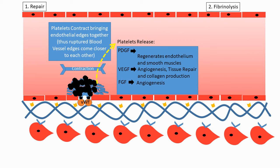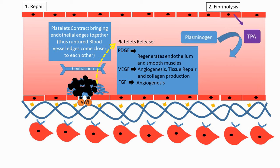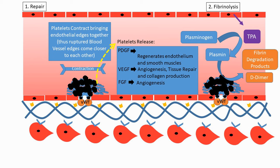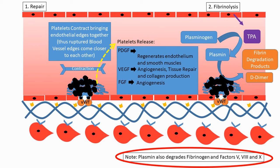Once repair has taken place, the body dissolves the blood clot through fibrinolysis. Endothelial cells release tissue plasminogen activator (tPA), which converts inactive plasminogen in the blood into its active form, plasmin. Plasmin then degrades the blood clot into fibrin degradation products and D-dimer. D-dimer levels are clinically important as physicians measure them to detect recent blood clot formation. Plasmin also degrades fibrinogen (factor 1) and factors 5, 8, and 10, thereby preventing further clot formation.